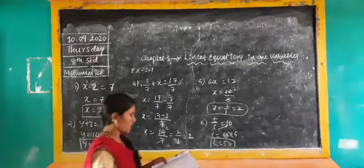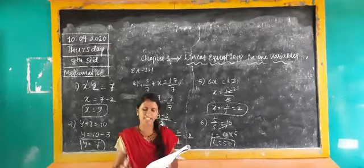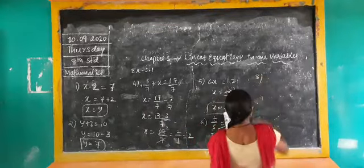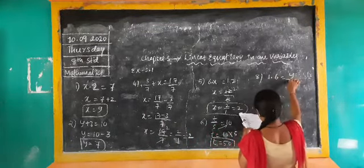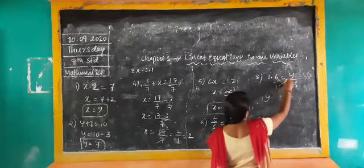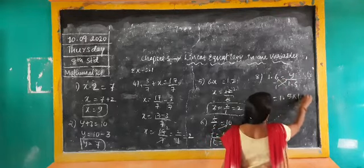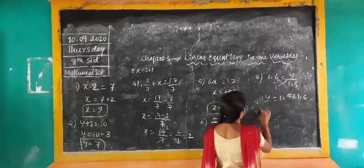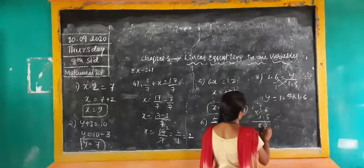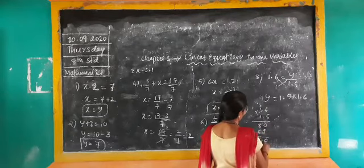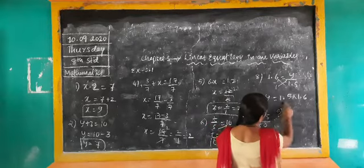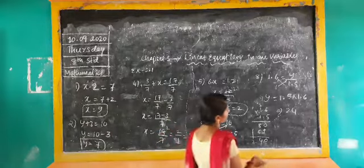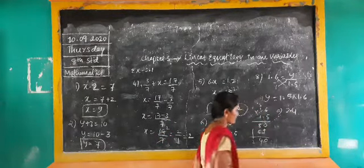Seventh question: 2x/3 is equal to 18. First multiply both sides by 3, giving 2x equals 54, then divide by 2 — you get the answer. Eighth question: 1.6 is equal to y divided by 1.5. Multiply both sides: y equals 1.5 into 1.6. Performing the multiplication — 1 decimal digit each — you get 2.4. So y equals 2.4.